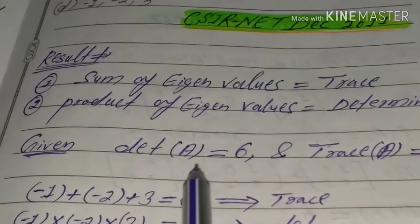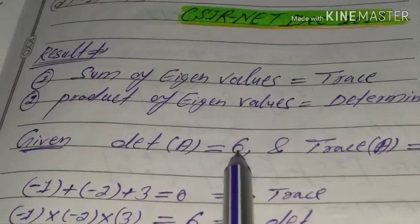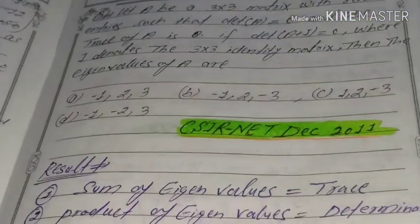The determinant of A is equal to 6 and trace A is equal to 0. This must be the given option.